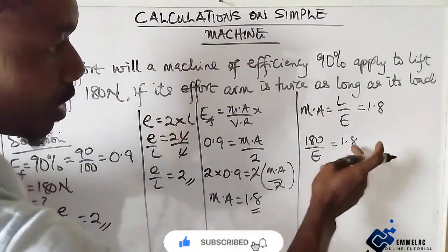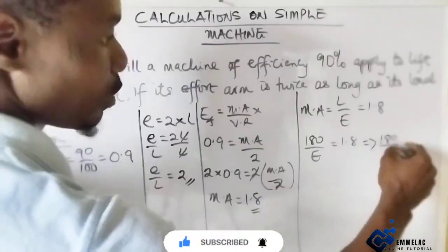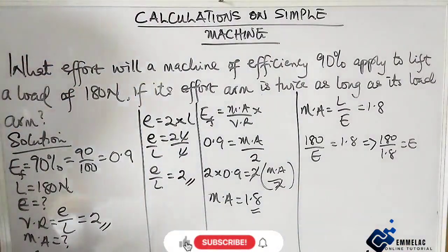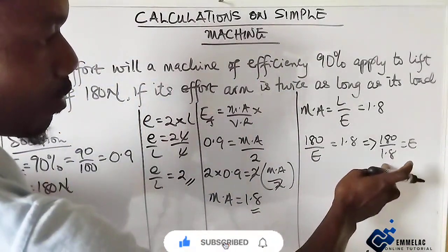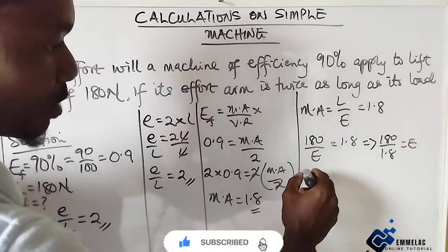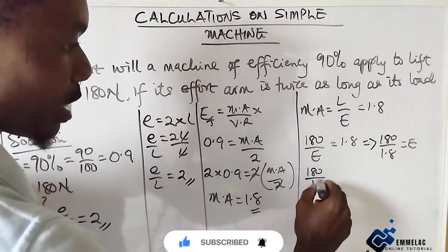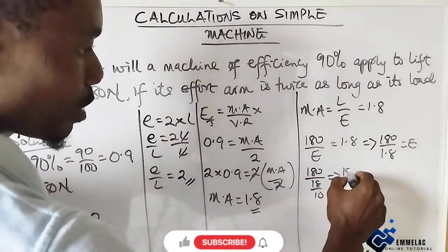So here, this also implies that 180 over 1.8 equals effort. And as such here, we divide through. For simplicity sake, this is nothing but 180 over 18 over 10, which implies 180 over 1 divided by 18 over 10.